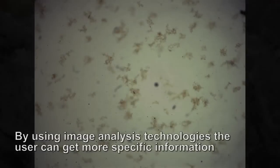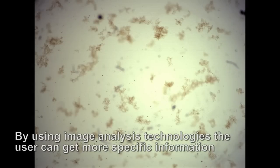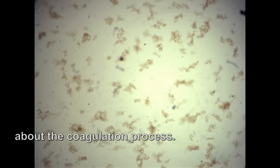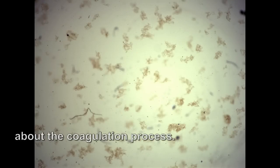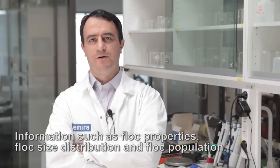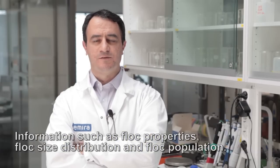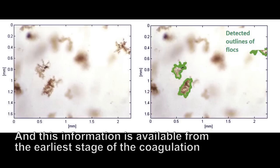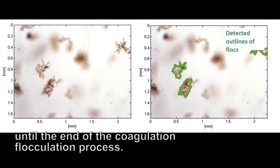By using image analysis technology, users can get more specific information about the coagulation process. Information such as floc properties, floc size distribution, and floc population. This information is available from the early stage of coagulation until the end of the coagulation-flocculation process.